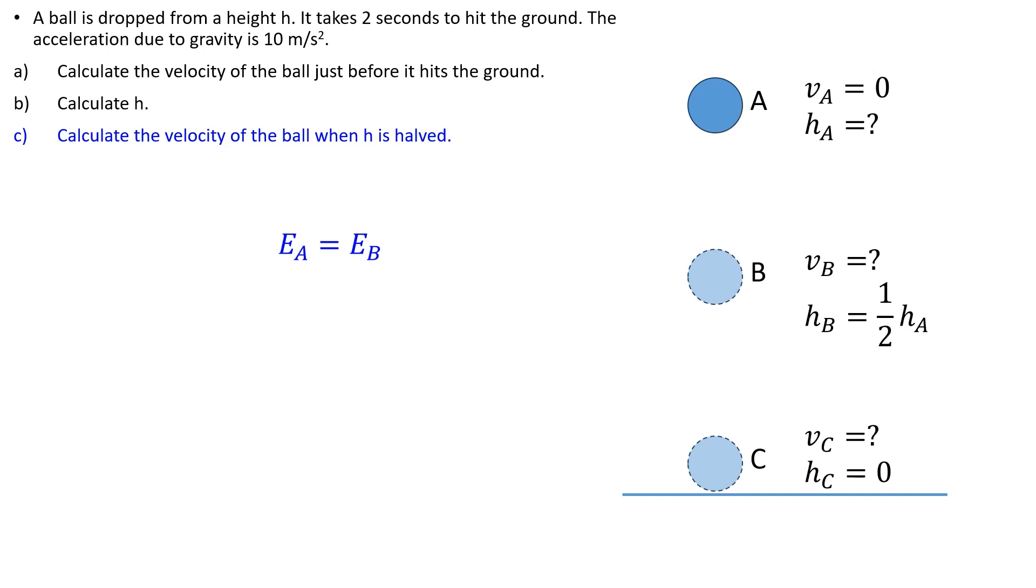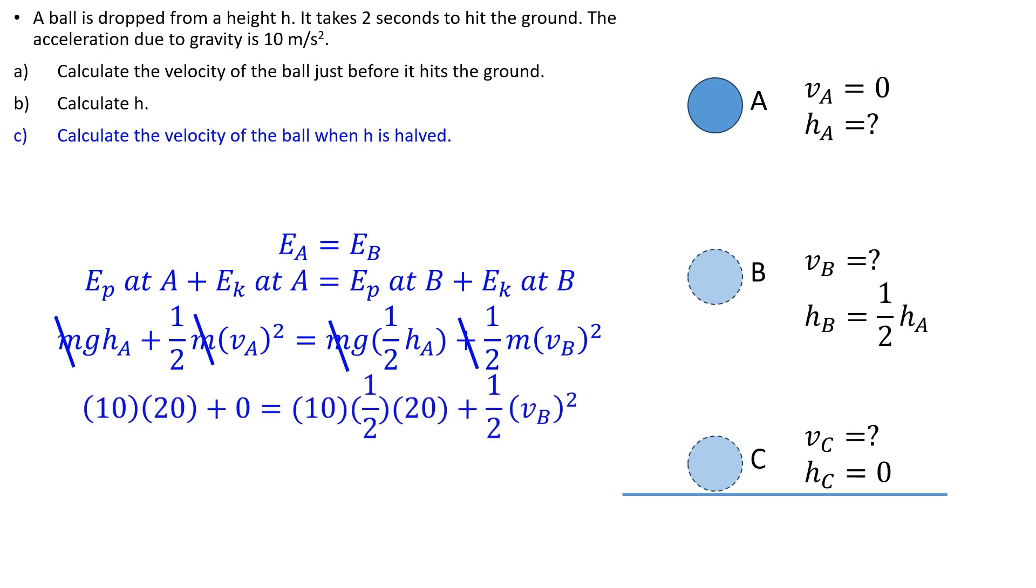Part C: Total energy at A equal total energy at B. Energy in gravitational potential store at A plus energy in kinetic store at A equal energy in gravitational potential store at B plus energy in kinetic store at B. Put in the formulae to form the equation. Simplify the equation by dividing both sides by M. Substitute variables into the equation. Solve for VB.